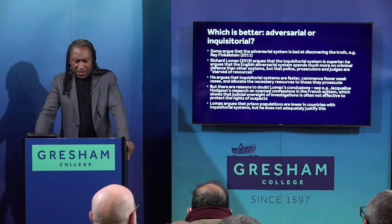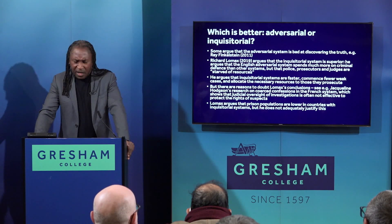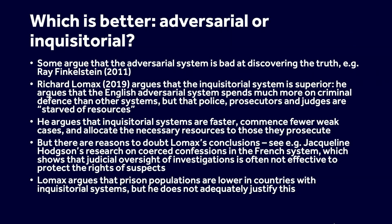Pause there. You and I might wonder why Lomax sees higher conviction rates as a good thing. But Lomax addresses this in a footnote where he asserts: quote, It would be an error to imagine that continental courts are all biased. Their systems commence fewer weak cases and allocate the necessary resources to those that they prosecute. He goes on to argue that the adversarial model means a lower probability of the truth being discovered, meaning that there are greater prospects of the innocent being wrongly convicted and the guilty being wrongly acquitted. He argues that in order to maintain the principles of deterrence, adversarial systems have to punish more severely, which is why these systems tend to have higher prison populations.